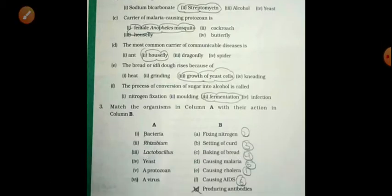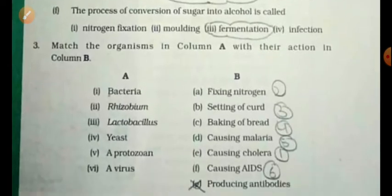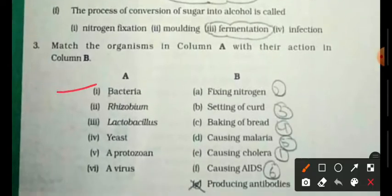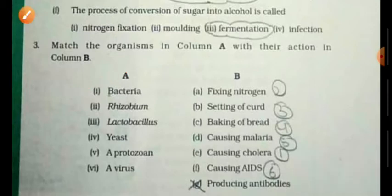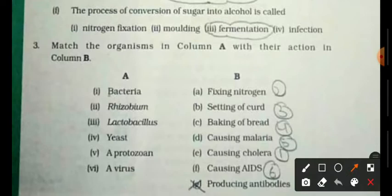Now the match the column. First column is bacteria. What are the number of diseases mentioned? Bacteria causes cholera. Next is rhizobium.